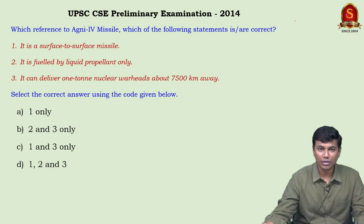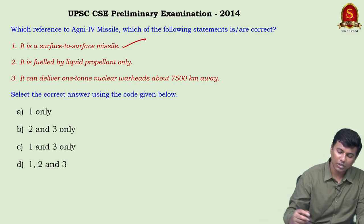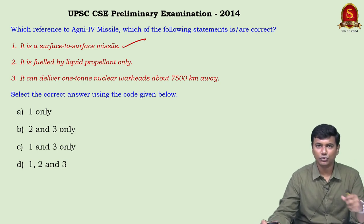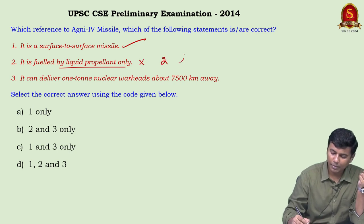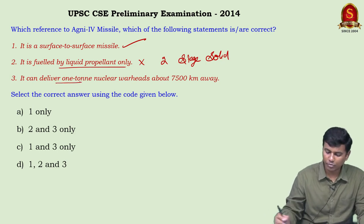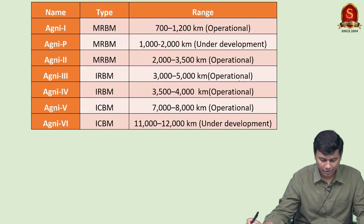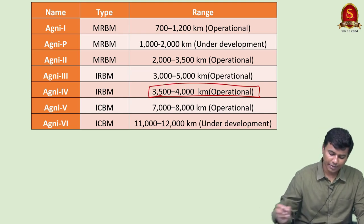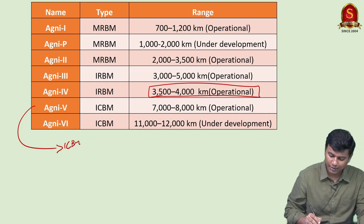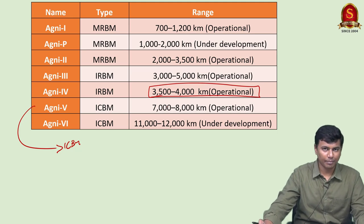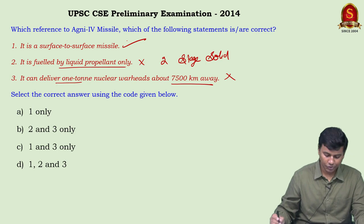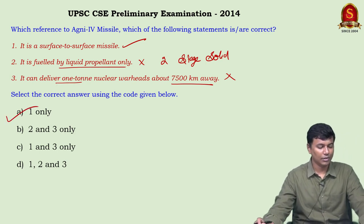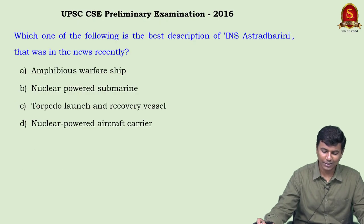From UPSC 2014: Agni-4 missile. Statement one — it is a surface-to-surface missile — correct. Statement two — fueled by liquid propellant only — wrong, it uses a two-stage solid propellant. Statement three — can deliver one-ton nuclear warhead up to 7,500 km — wrong, Agni-4's claimed range is up to 4,000 km; Agni-5 is the intercontinental ballistic missile with longer range. Answer: 1 only.